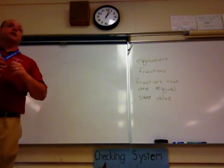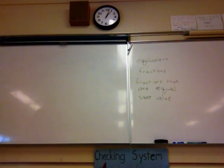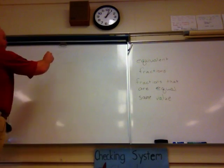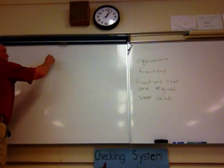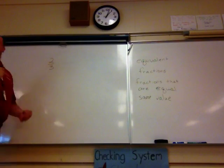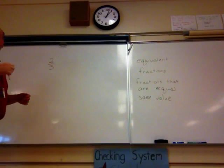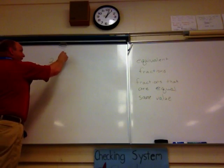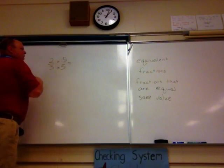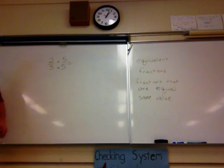The first way we're going to talk about how to find equivalent fractions is by multiplying. So what I'm saying is that you take a fraction like two-thirds, and if you multiply the numerator and the denominator by the same thing — like five — you're going to get an equivalent fraction.